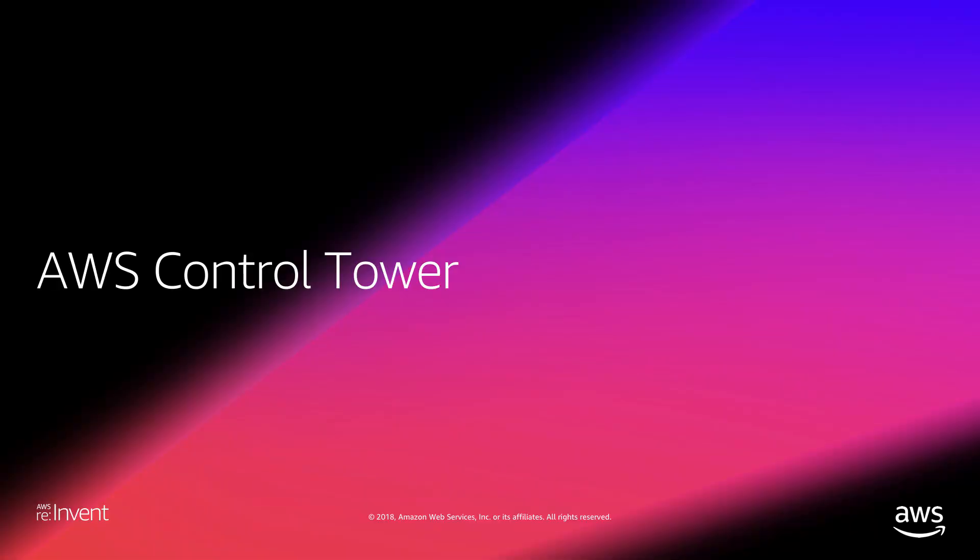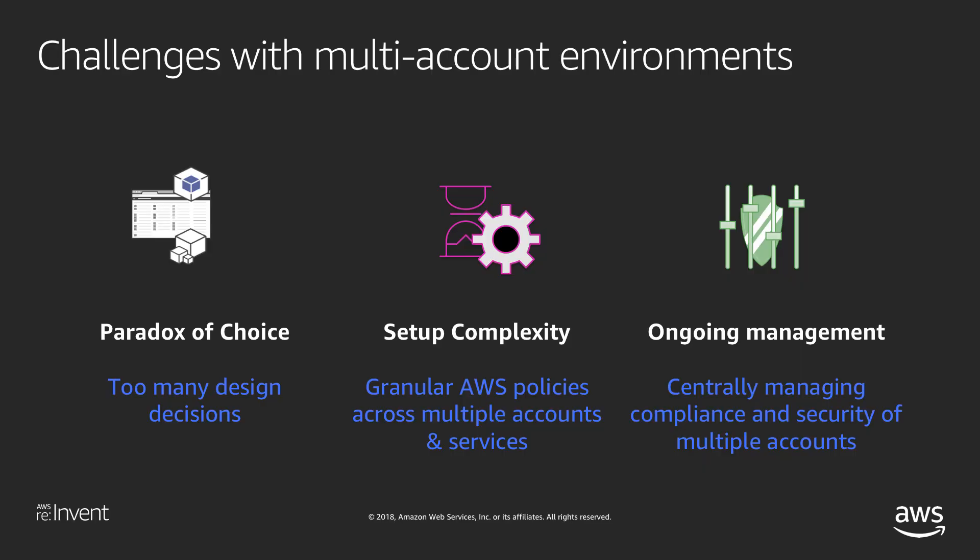Next up is AWS Control Tower. This service was announced at reInvent and is in private preview today, releasing in the upcoming future. Control Tower is trying to solve the challenge of managing a multi-account environment. Many customers, as they mature their workloads on AWS, may start out with a single account and a single VPC, then realize the flexibility of multiple VPCs. At some point, organizations realize they need multiple accounts — either for managing the blast radius of administrative users or getting separate invoices for different departments. Having multiple accounts is a best practice.